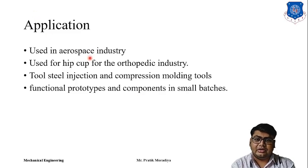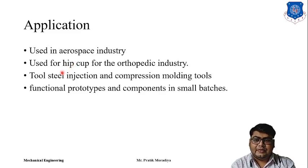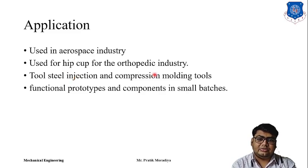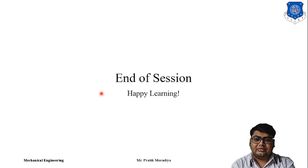Electron beam melting is used in the aerospace industry. It is also used in the orthopedic medical industry — for example, hip cups for hip replacement surgery can be manufactured using electron beam melting. Tool steel injection and compression molding tools can also be manufactured. Functional prototypes of metal components in small batches can also be produced. These are the different application areas of electron beam melting, and that will be it for today's session.